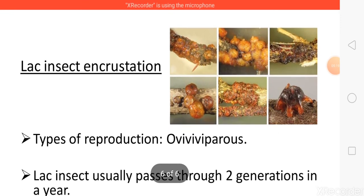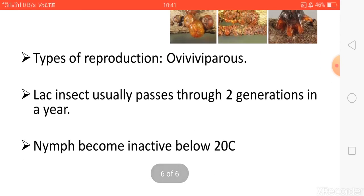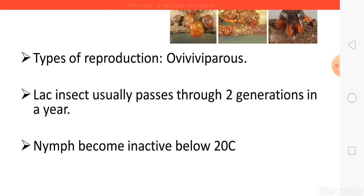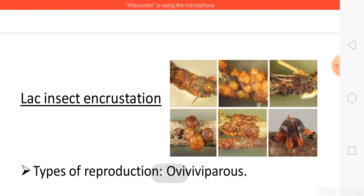In the diagram shown, you can see the incrustation of the lac insects. The type of reproduction is oviparous. Lac insects are classified as bivoltine, meaning they pass through two generations per year. Insects are characterized on the basis of generations per year as univoltine, bivoltine, or multivoltine. Nymphs become inactive below 20 degrees Celsius. These are the key points on the biology of lac insects.